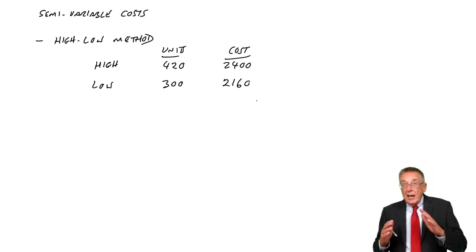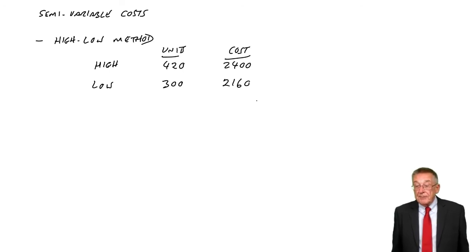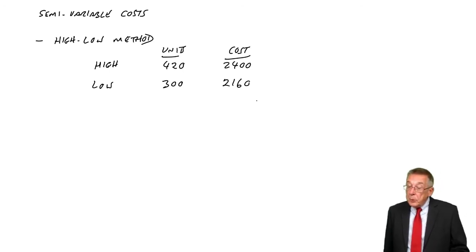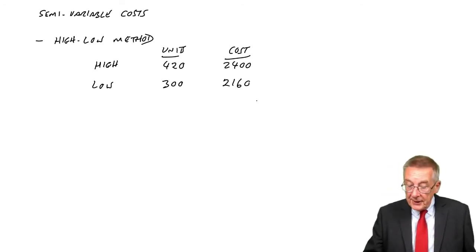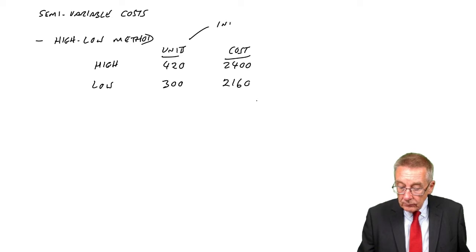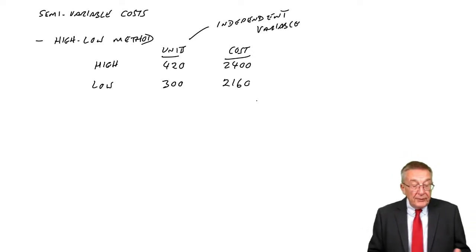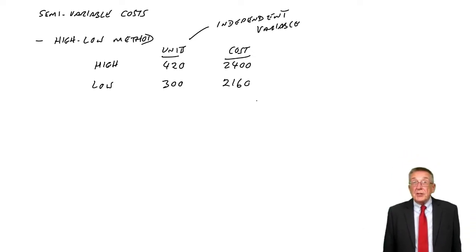So we take the highest and the lowest, forget all the others. And rather importantly, it's the highest and lowest of what we call the independent variable. And what do I mean by that? We have two variables, the units produced and the cost.